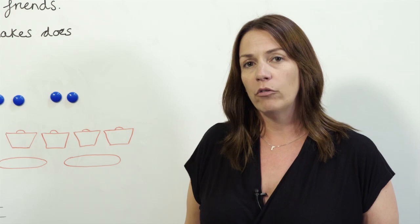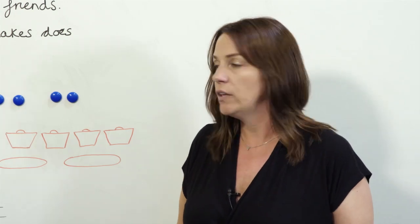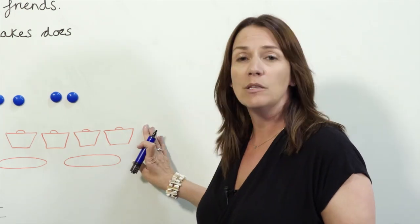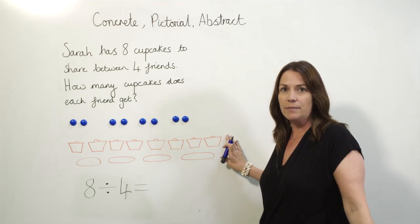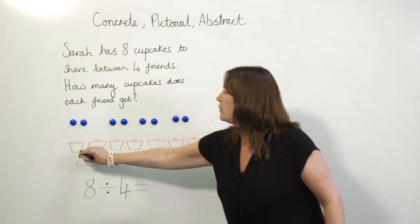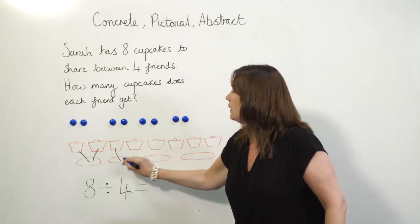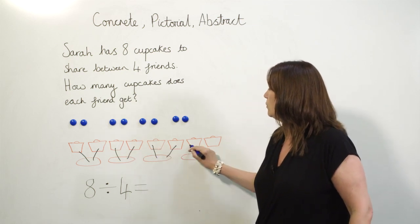Then we move on to the pictorial stage. This is really important for children to use pictures and models to make sense of the maths. So here they could use the pictures to show that you would put two cupcakes on each plate.